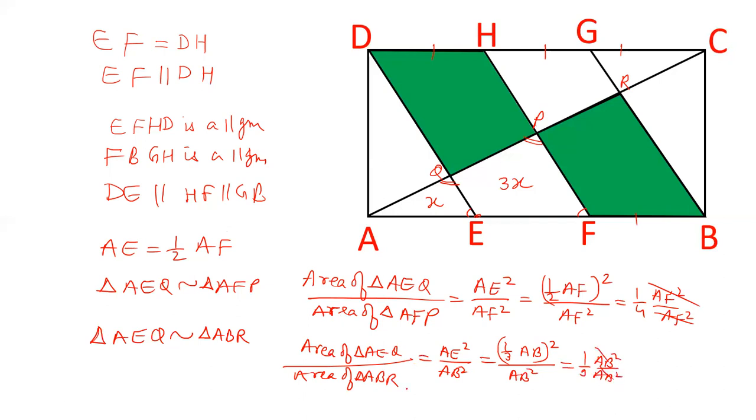1/3 squared is 1/9, so AE² is 1/9 AB² upon AB². Cancel out. That is, 1/9 of area of triangle ABR is AEQ. And we know that AEQ is x. So area of triangle ABR is 9x.